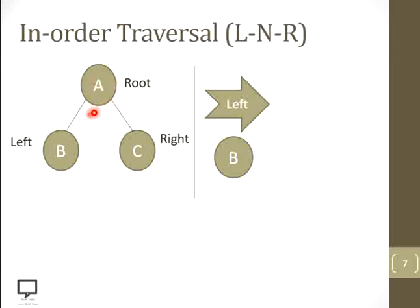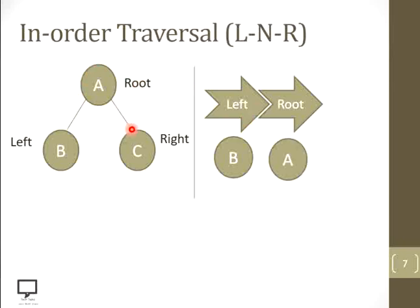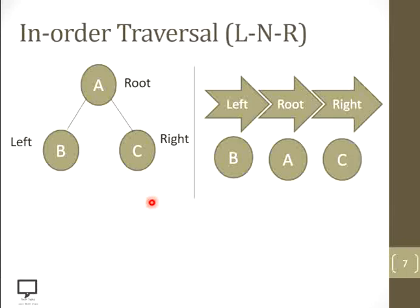After the left child is completed, we need to go to the root node. The root node is A, so we process root node A. Then after completion of the root node, we need to go to the right child. Which one is the right child? C is the right child, so C we need to process.